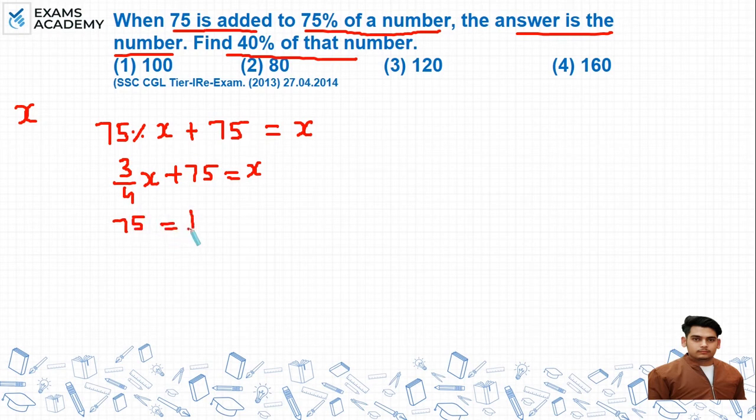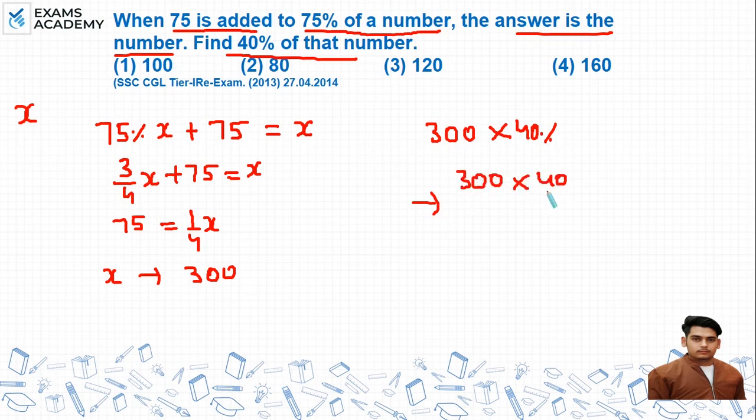From here, the value of x comes out to be 300. Now if we take 40% of this number 300, we write the percentage as 40 over 100. Zeros cancel, so 40% of this will be 120, which is option number 3.